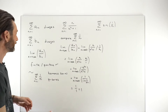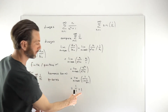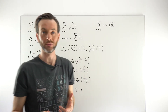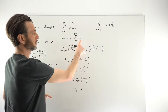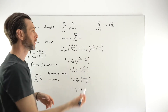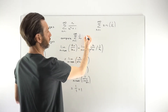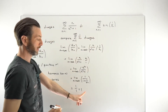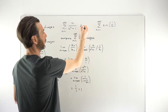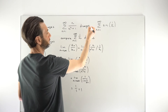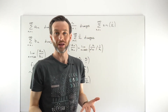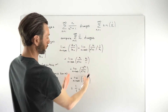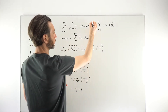We've run our limit comparison test and it came out to be 1 - a finite and positive number - so the criteria is met. That tells us our original series and the harmonic series have the same behavior. Since the harmonic series diverges, our original series also diverges. That example shows how the test works in practice. Now let's move on to the more complex example, which will involve a bit more algebra.